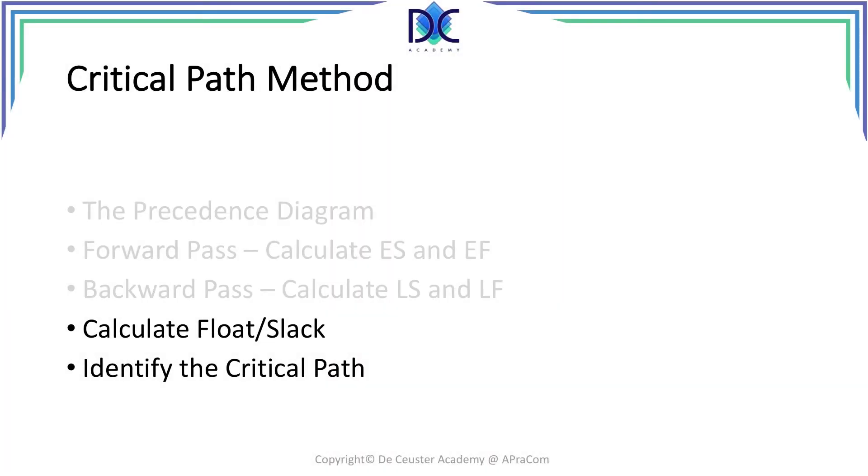Welcome to the last session of the critical path method. In the previous session we performed the forward and backward paths and calculated the early start, early finish, late start, and late finish of all activities. What remains is calculating the float or slack and identifying the critical path.